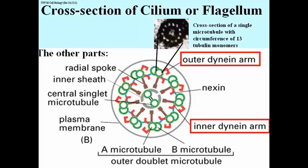We're going to see that in more detail in the context of an experiment that led us to a sliding microtubule model for the bending of a cilium or a flagellum. It's the dynein arms — outer and inner — that are going to allow cilia or flagella to bend. Each doublet is at the end of a radial spoke that projects from the center of the cilium or flagellum.